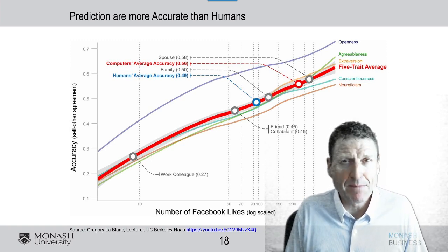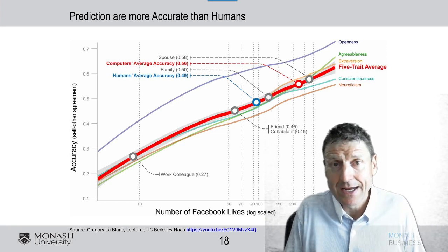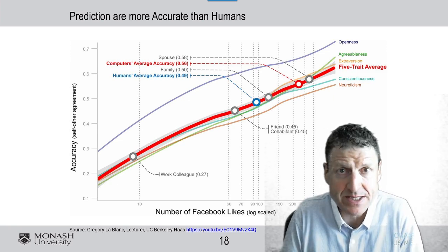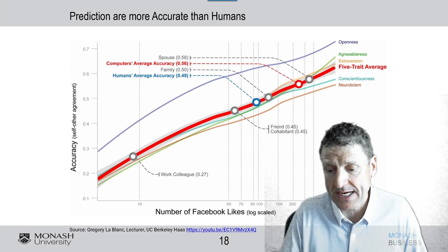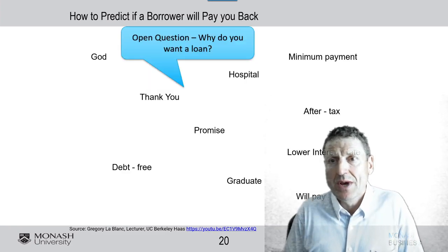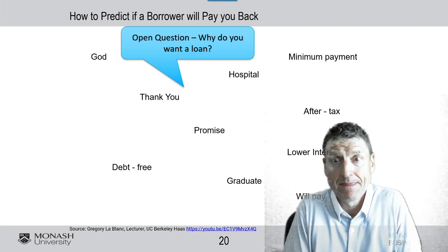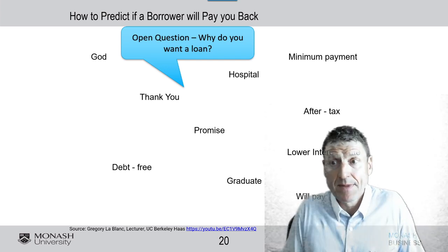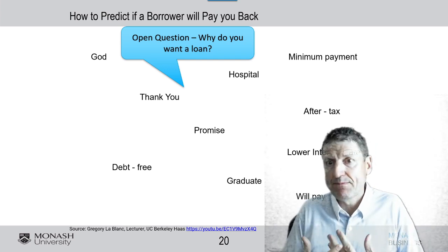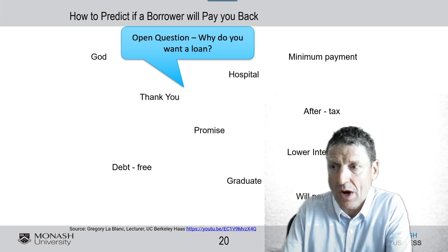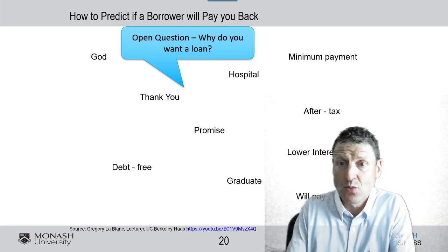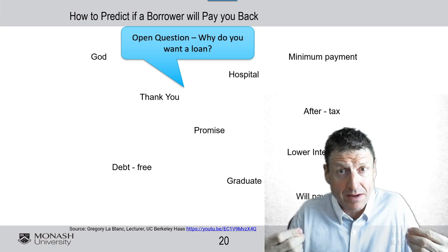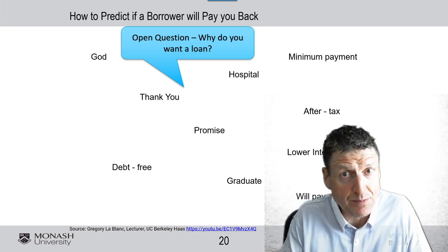That is amazing — what big data is actually doing to help loan and lending decisions today, in banks and by fintechs. I can help predict whether a borrower will pay me back by asking the borrower: why do you want a loan? And if the borrower uses one of the following words, which of these would you predict is a better predictor of their ability to pay back?